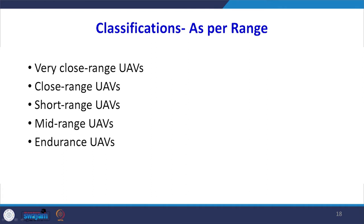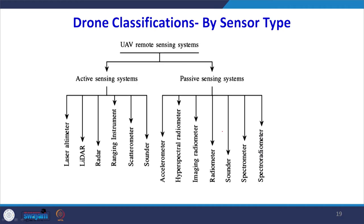As per range, the classification has been done into close-range UAVs, short-range UAVs, mid-range, and endurance. Again, according to the distance — the range from which they can be operated from the ground — they have been classified.